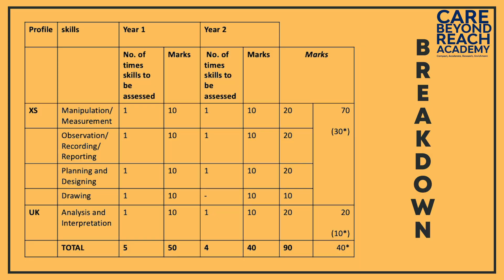For example, for analysis and interpretation you have 10 marks for year one and 10 marks for year two. You average your year one AI score, average your year two AI score, then add both together to get the 20 marks. But remember, drawing is only assessed in year one — there is no year two drawing grade. So you end up with a maximum of 20 points for four skills and 10 for drawing, which totals 90 marks.